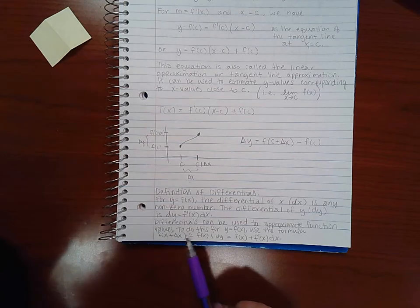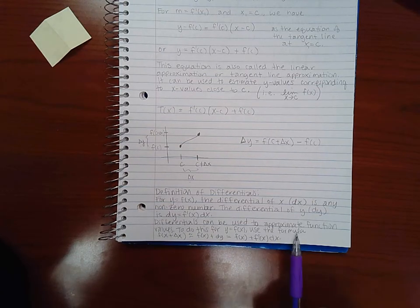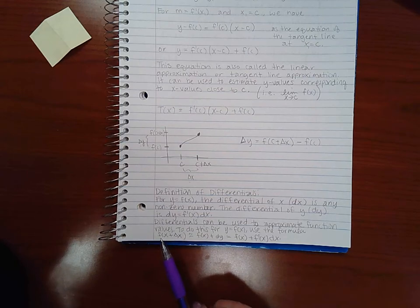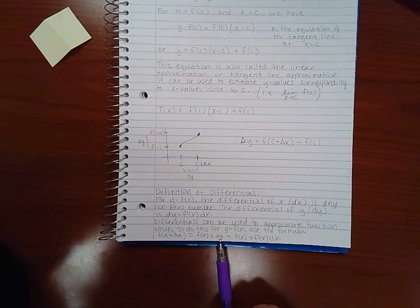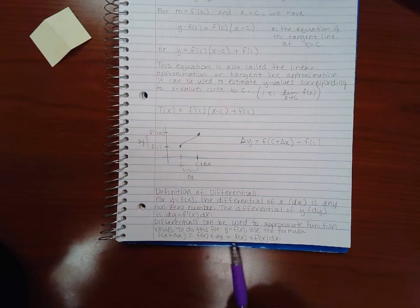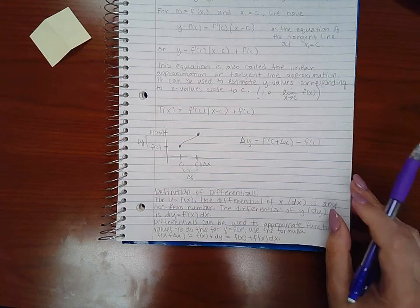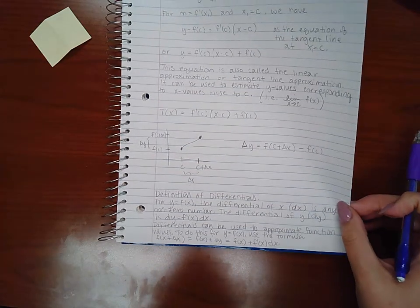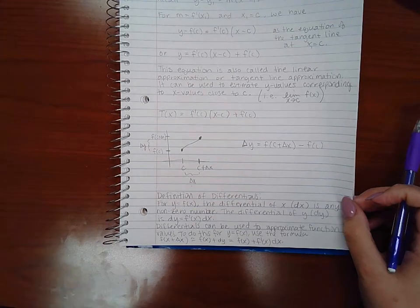To do this, for y equals f of x, you use the formula: the function of x plus delta x is approximately equal to f of x plus the differential y, the difference in the y values, which is equal to f of x plus f prime of x dx. So this is just going over all the different pieces of it, but we are going to be trying some examples in the next video.